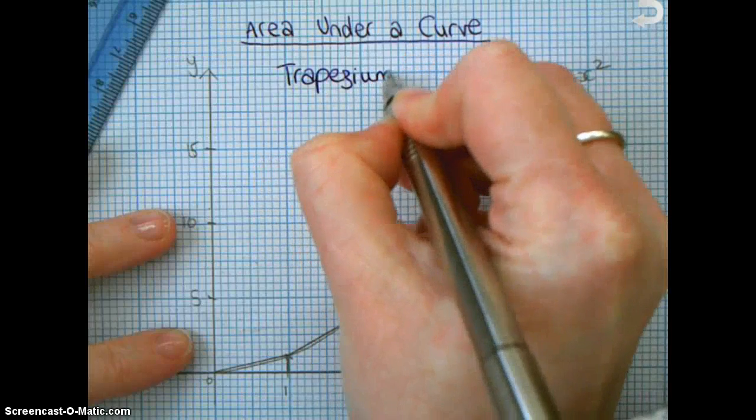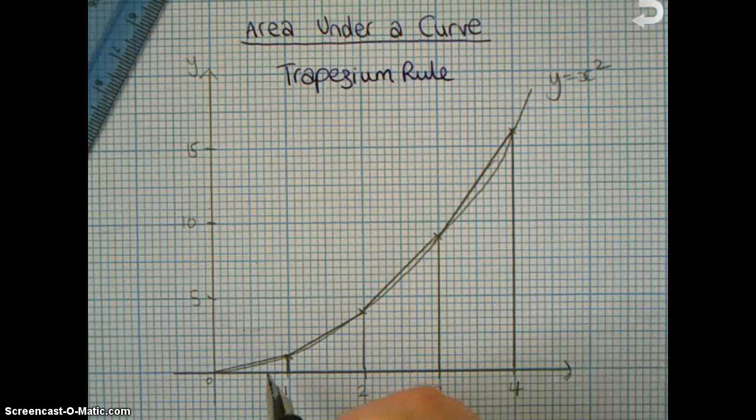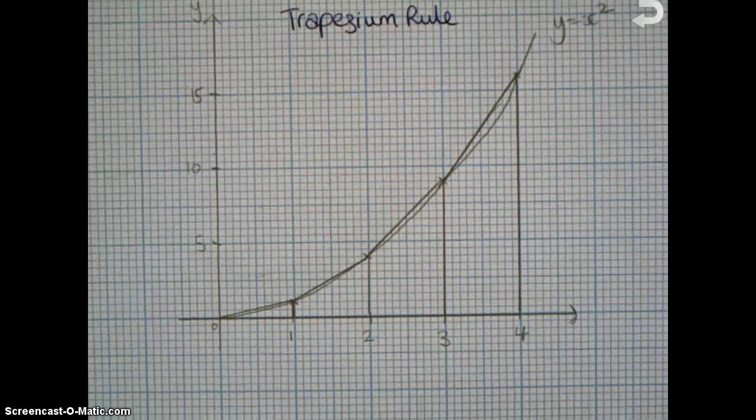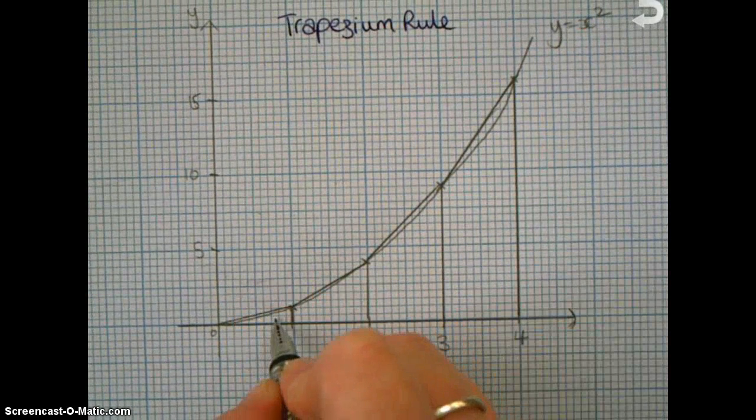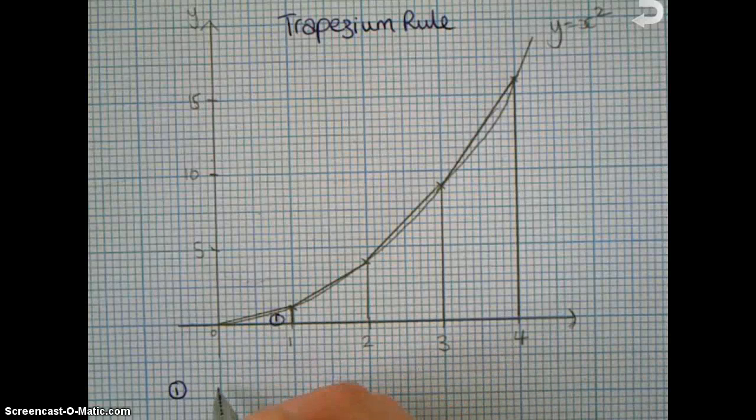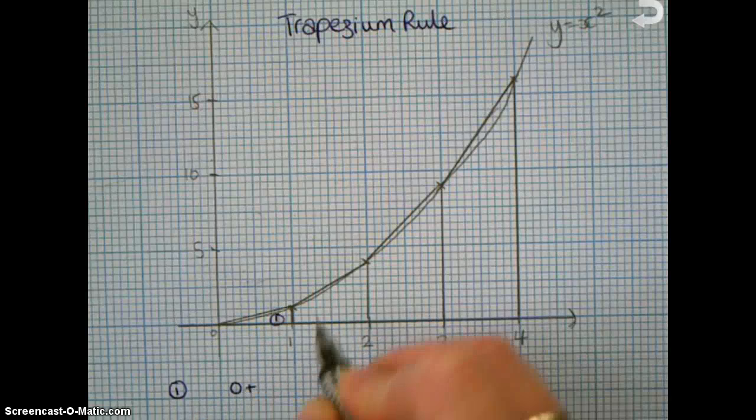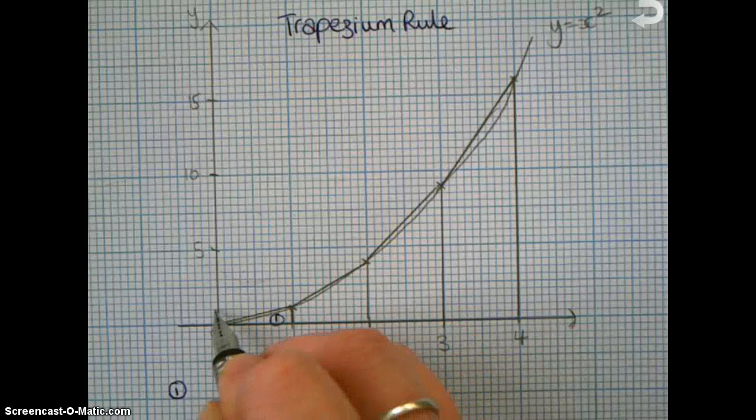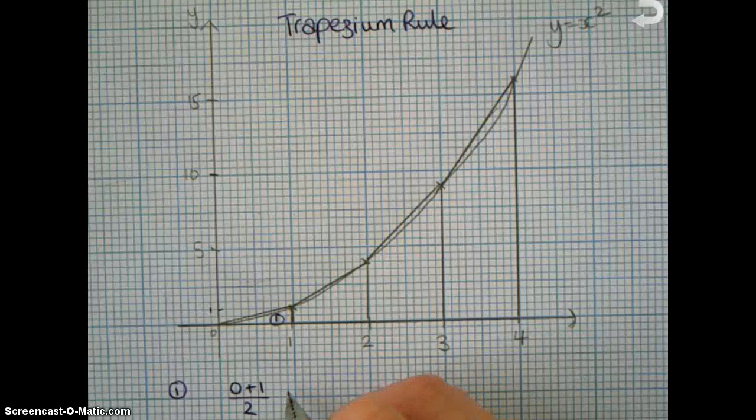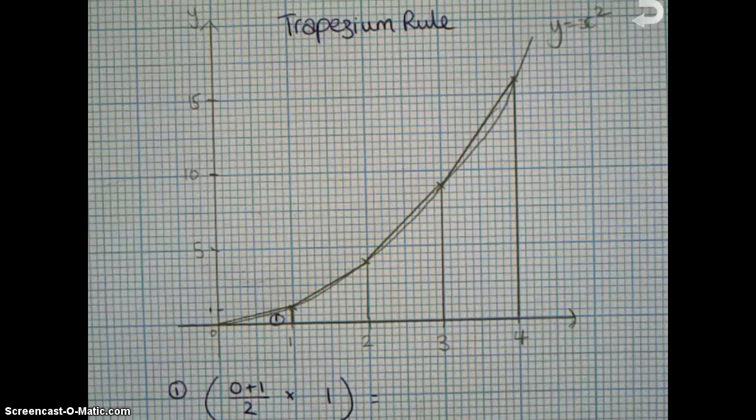So what we do is we say, if I look at each of these trapeziums separately, so I've got 1, 2, 3, 4, and I work out the area of each one individually. So trapezium number 1, I'll say the area of that trapezium is the sum of the parallel sides. So this parallel side is 0, plus the height of this side, well, 1 squared, that goes up as high as 1. So it's 0 plus 1, divided by 2, times by the height, the distance there is my 1. And that will give me the area of that trapezium.